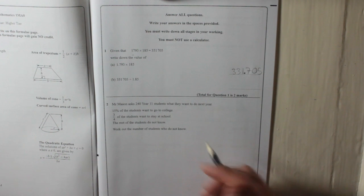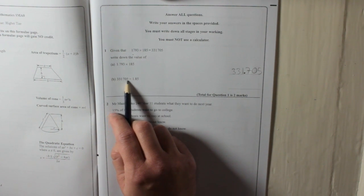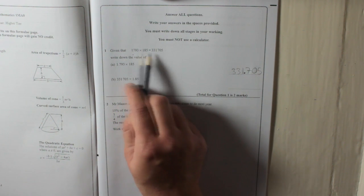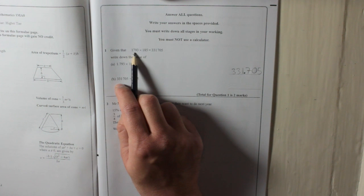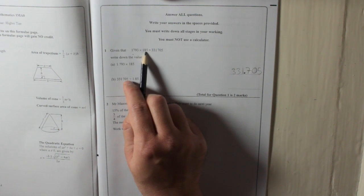Part B. It's a division. 331,705 divided by 1.85. Now, look at this one. If that times that is that, then this divided by this will give you this.